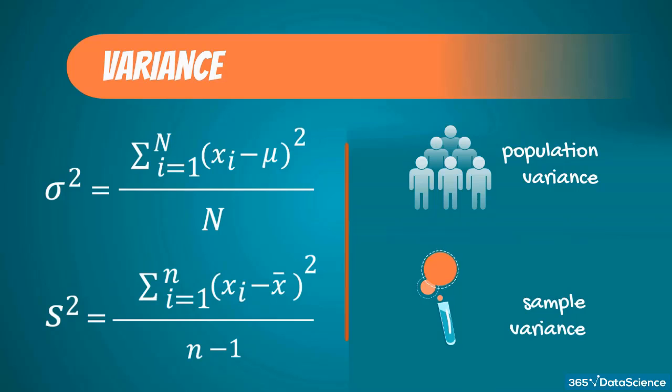Sample variance, on the other hand, is denoted by s squared (s²), and is equal to the sum of square differences between observed sample values and the sample mean, divided by the number of sample observations minus 1.